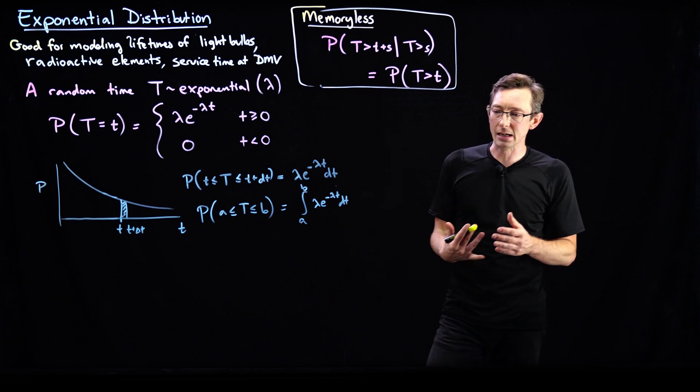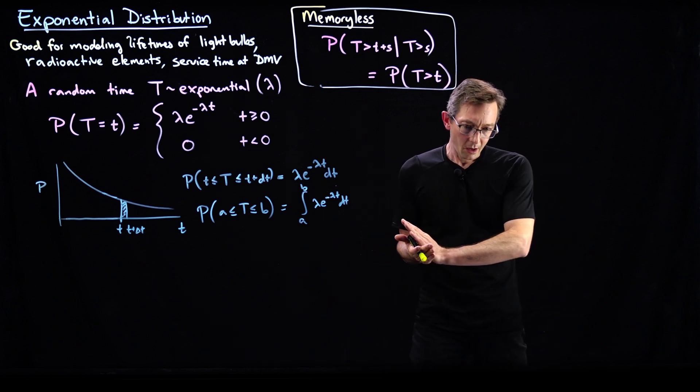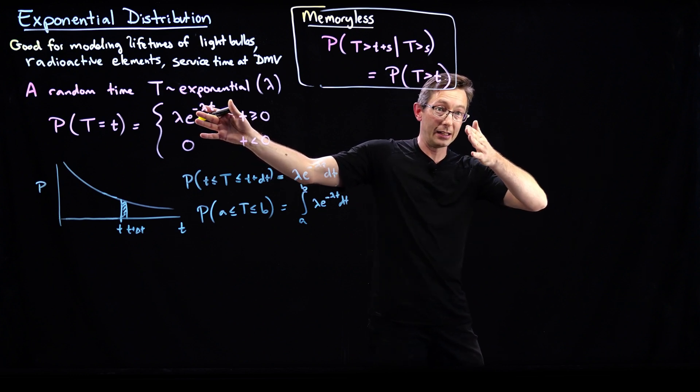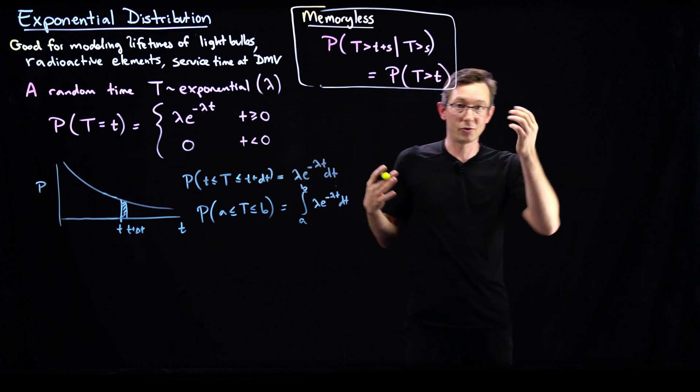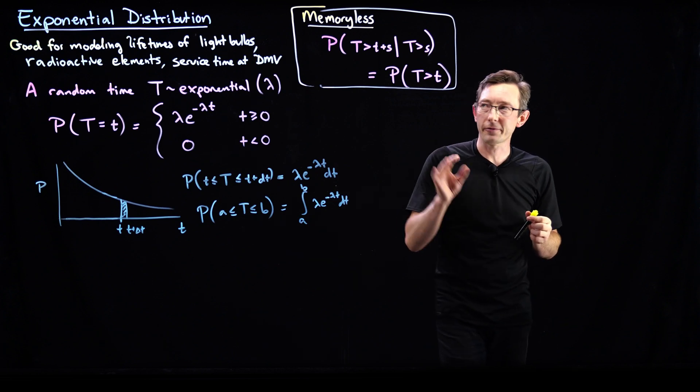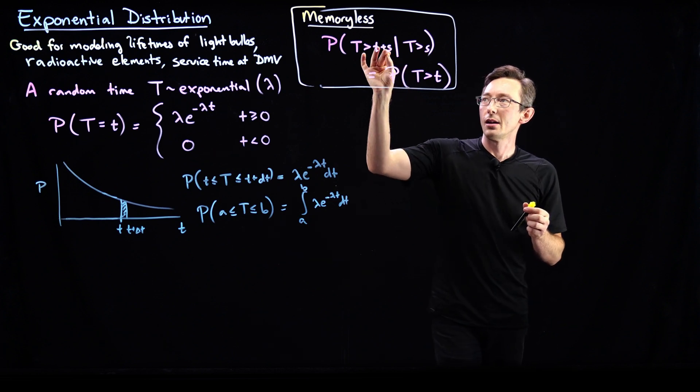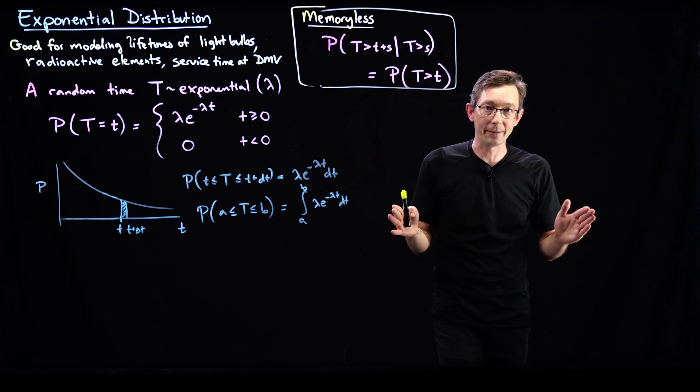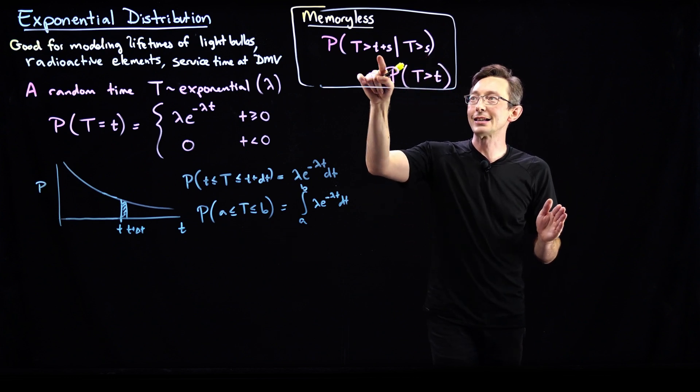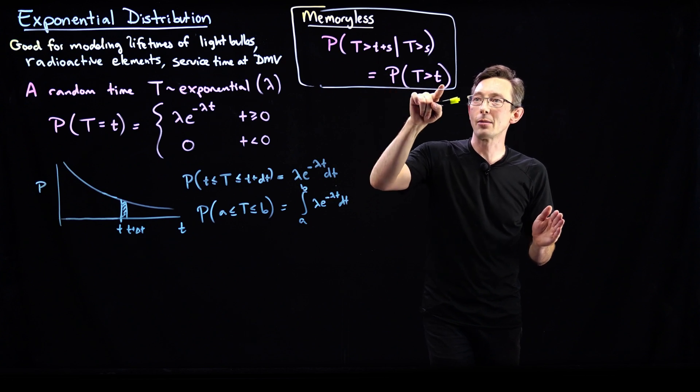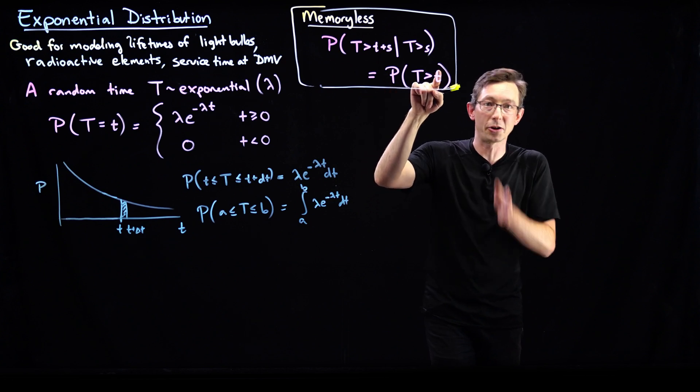It essentially means that there is some probability of failure in the future, and it changes over time. And if s amount of time has already elapsed, then the probability of lasting another t amount of time is the same as the probability of lasting t starting at time zero.